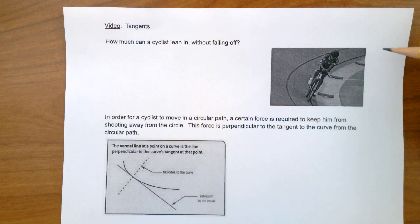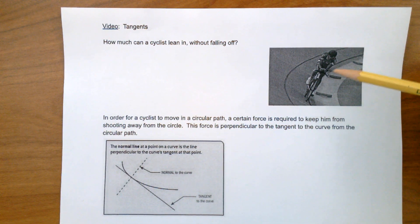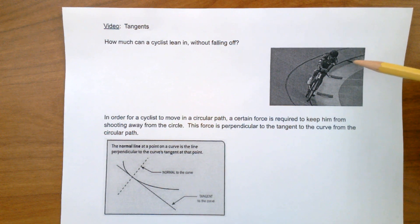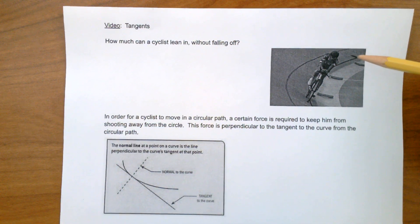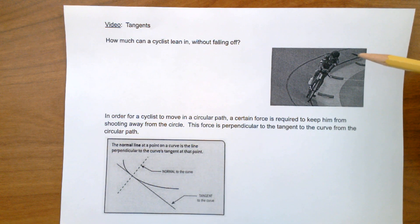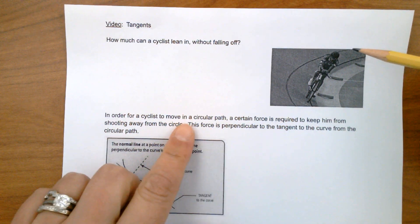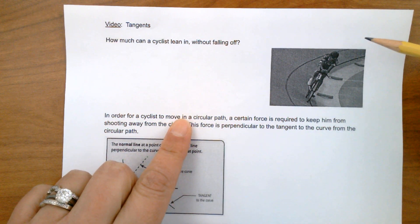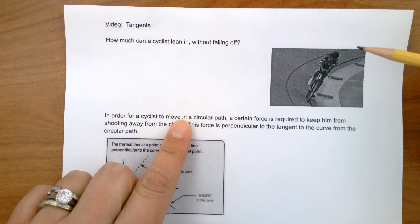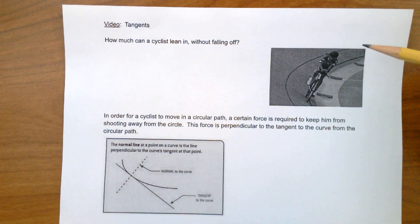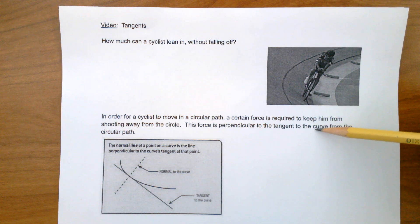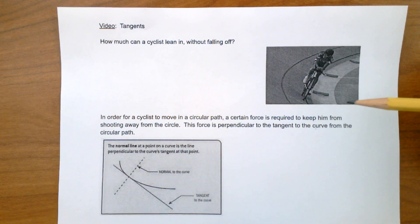In the Olympics and in other areas of cycling, a cyclist travels in a circle arena, and what happens is they start getting faster and faster, and they start leaning. This can be applied with how much a cyclist can lean in without falling off. In order for a cyclist to move in a circular path, a certain force is required to keep him or her from shooting away from the circle. The force is perpendicular to the tangent to the curve from a circular path.